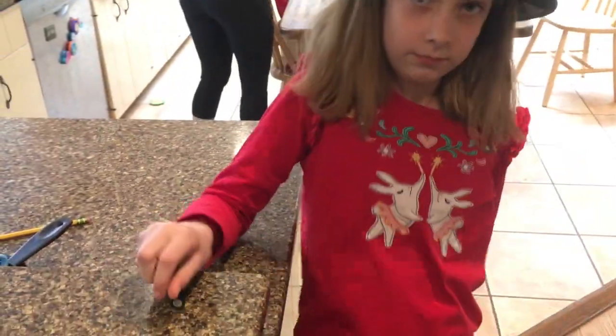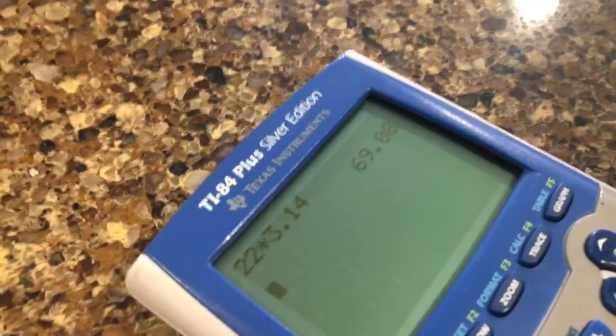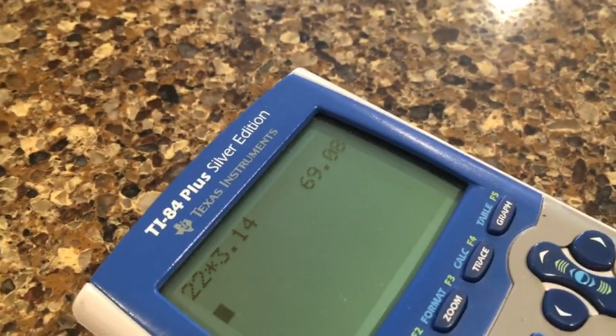We get 69.08. What do you think of that? Looks very close to 70. I think it works out considering we weren't being precisely exact. Pi times diameter, that is the circumference, that is one revolution of the wheel.